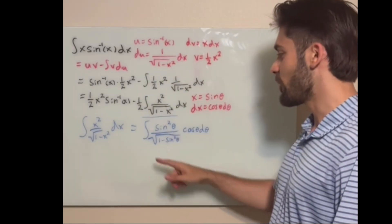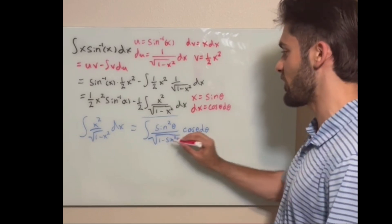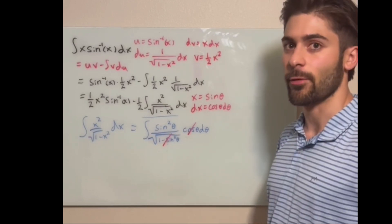So if you remember your trig identity, square root of 1 minus sine squared is cosine, which is the whole point of the trig substitution, and that cancels these out. So now we just have integral of sine squared, which we have to use one of the double angle formulas to solve.